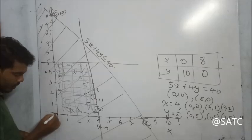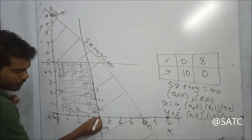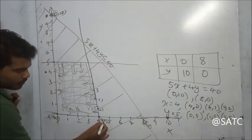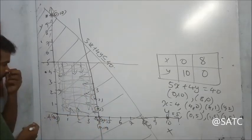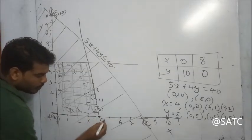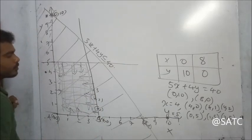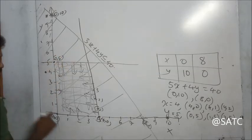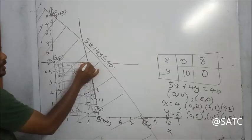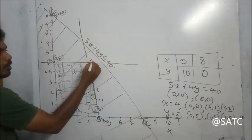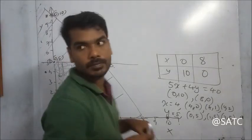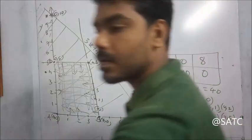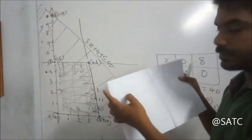The corner points of the feasible region are: A at (0, 0), B at (4, 0), C at (4, 5), and D at (0, 5). Point C is at (4, 5).